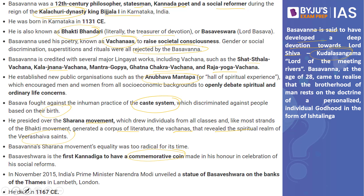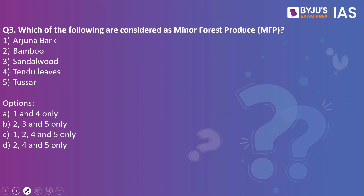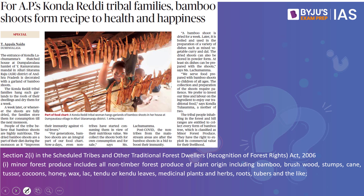Now let's look at the next practice question: Which of the following are considered minor forest produce? Options: Arjuna bark, bamboo, sandalwood, tendu leaves, and tusha. The answer is 1, 2, 4, and 5 only. We took this practice question because an article in The Hindu makes a reference to minor forest produce.